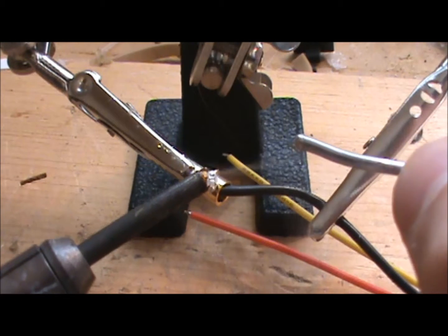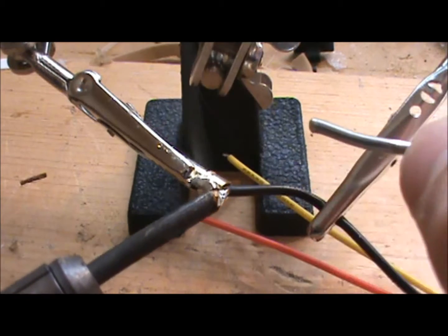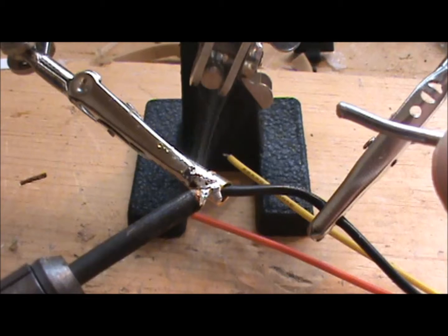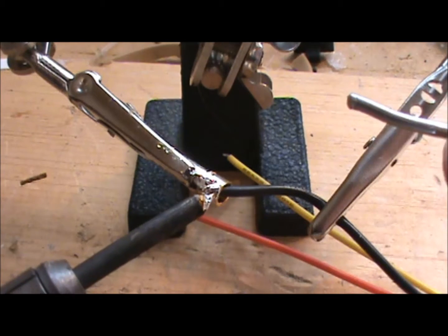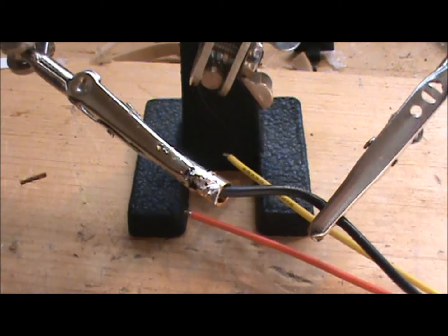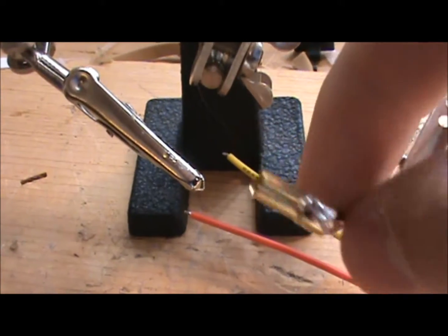And then you just lightly tap it on there, move it around so it gets all over so there's no cold solder joint. And then you just wait a few seconds. Solder doesn't take very long at all to cool down. So once you kind of see it fuzz over so it's not as shiny anymore, then you can take it off and you have your solder joint.